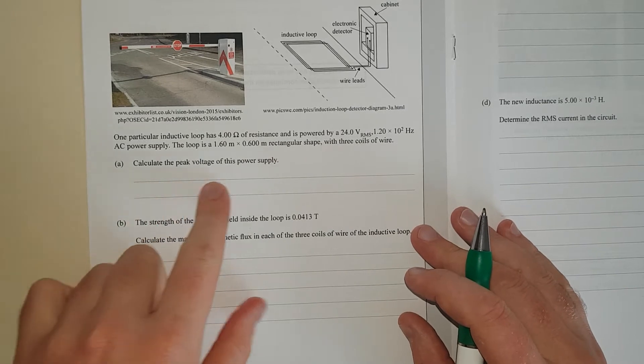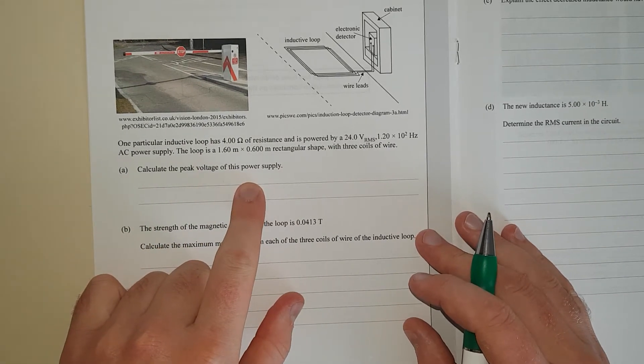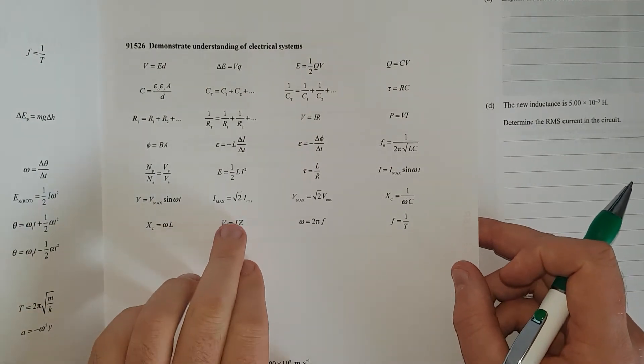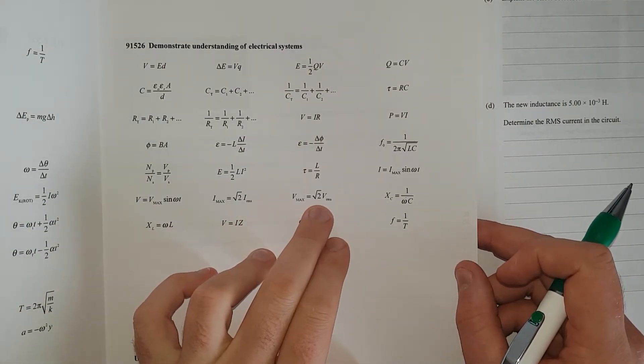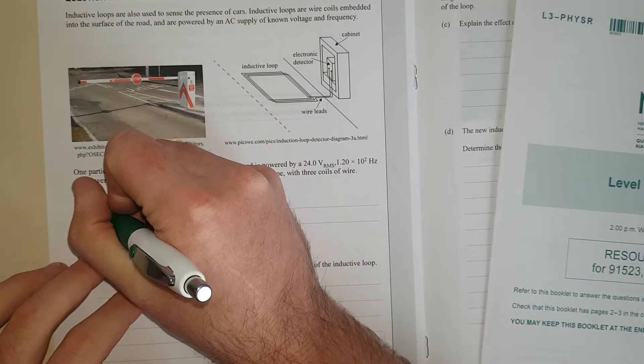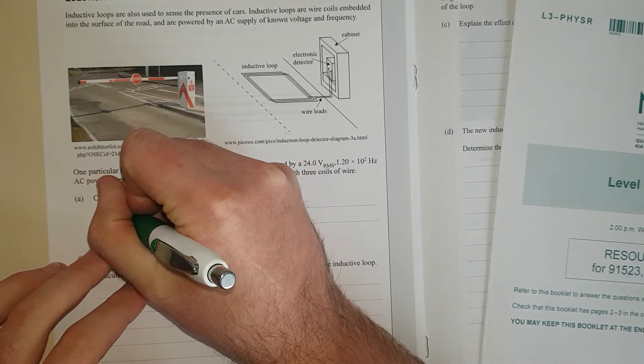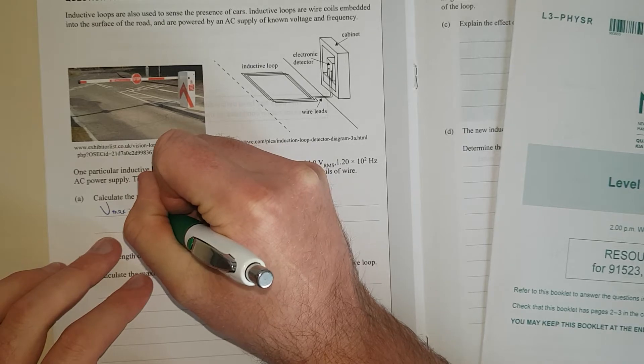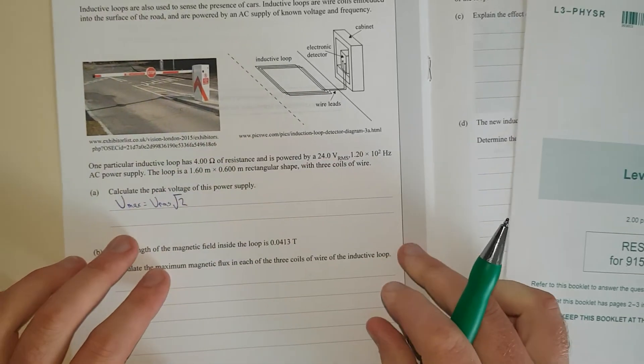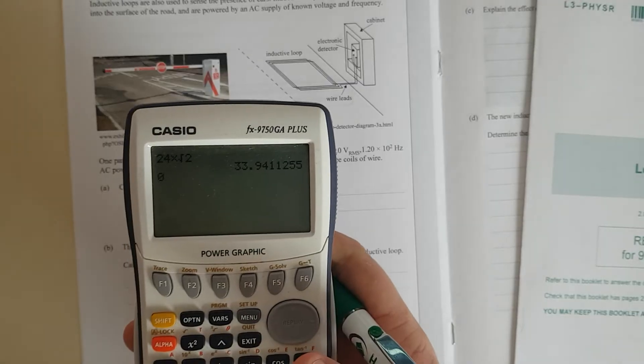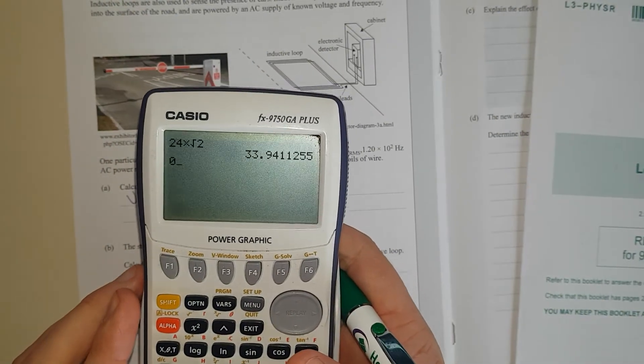Calculate the peak voltage of this supply. From the formula sheet, Vmax equals root 2 times V RMS. So we're going to calculate Vmax equals V RMS times root 2. Calculating this in the calculator gives us 33.94 volts.